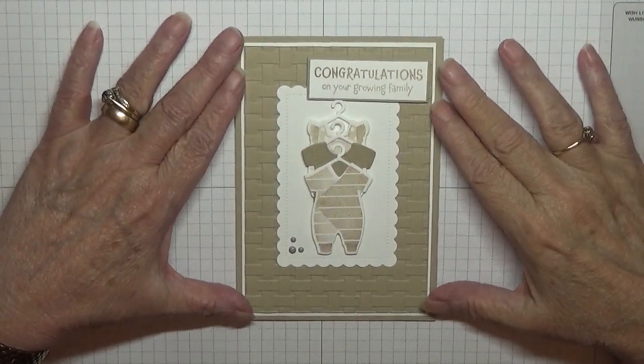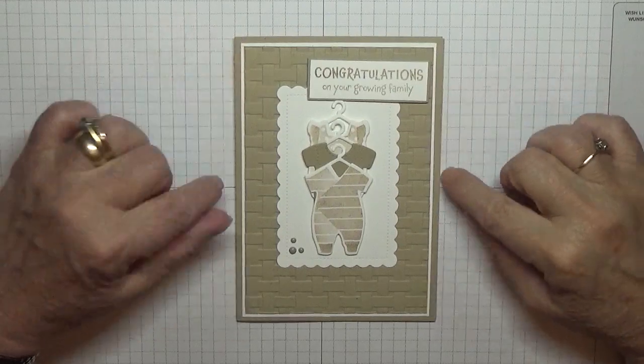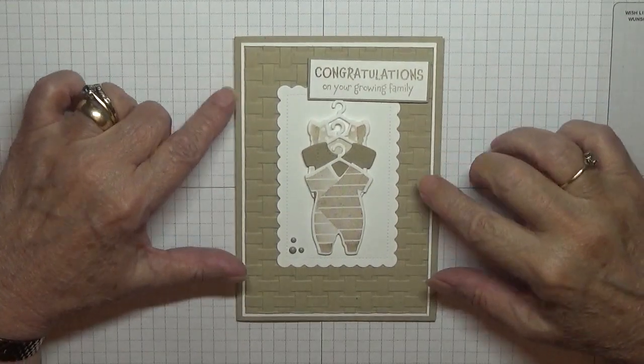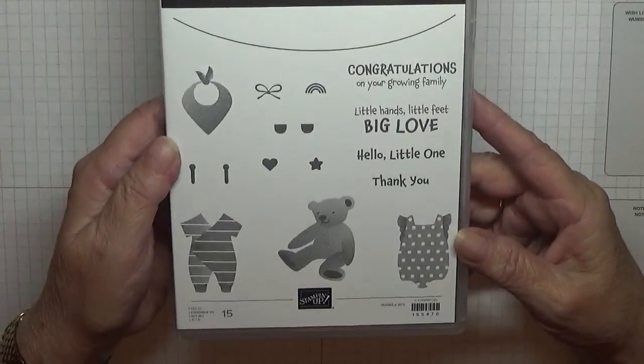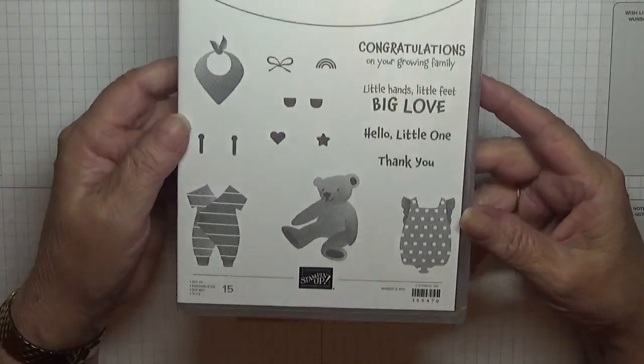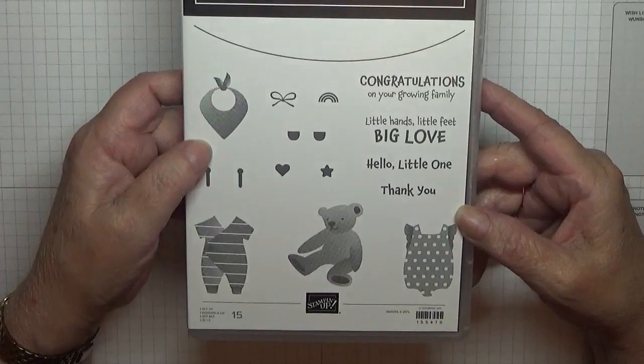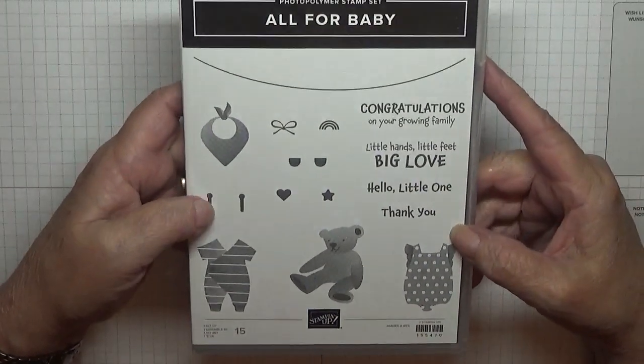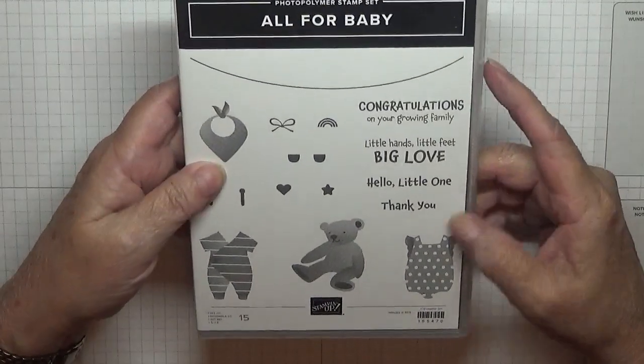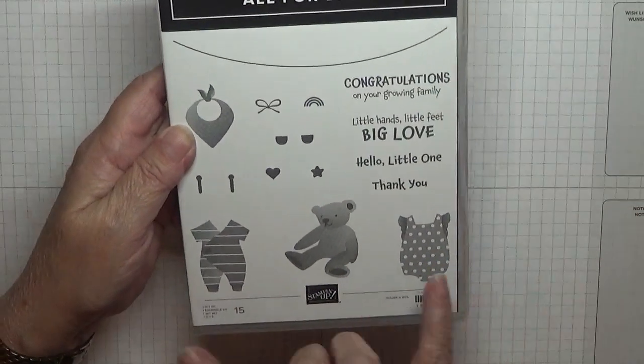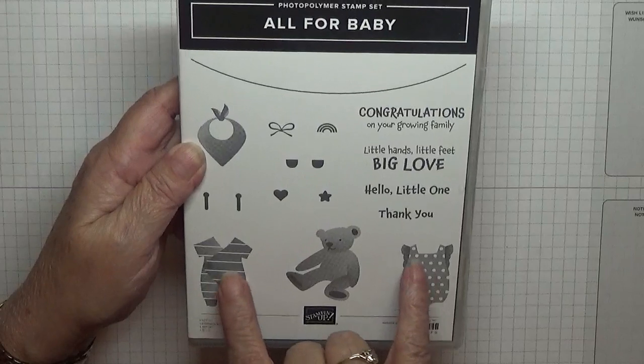Hello, welcome back. Georgie B here. Today I'd like to show you how I made this card. I made this card using this new set to me, All for Baby. Today we're going to use the baby grows or the onesies.